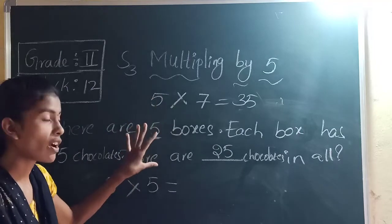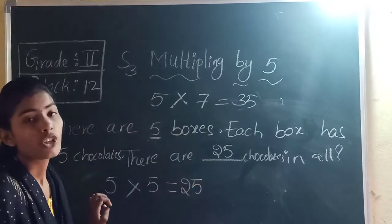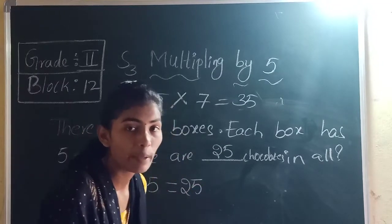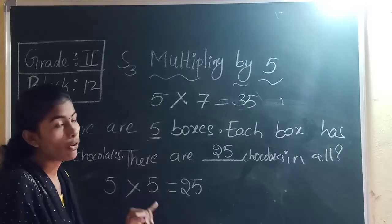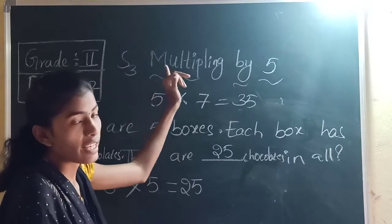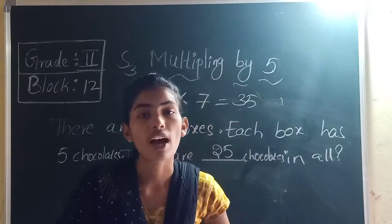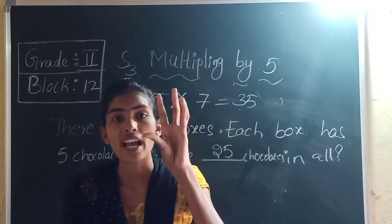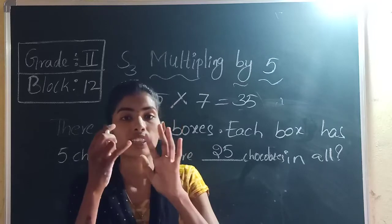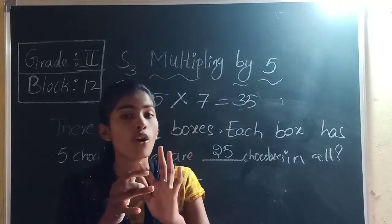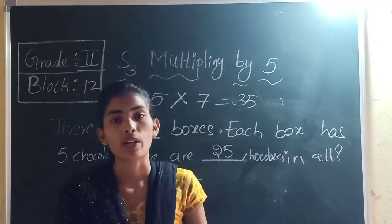For this sentence, the multiplication sentence is 5 into 5 equals 25. So here we are multiplying any number with 5. S3 is about multiplying by 5. If you multiply any number with 5, it is very easy using skip count: 5, 10, 15, 20, 25, 30, 35, 40, 45, 50. Like this you can use 5 skip count.